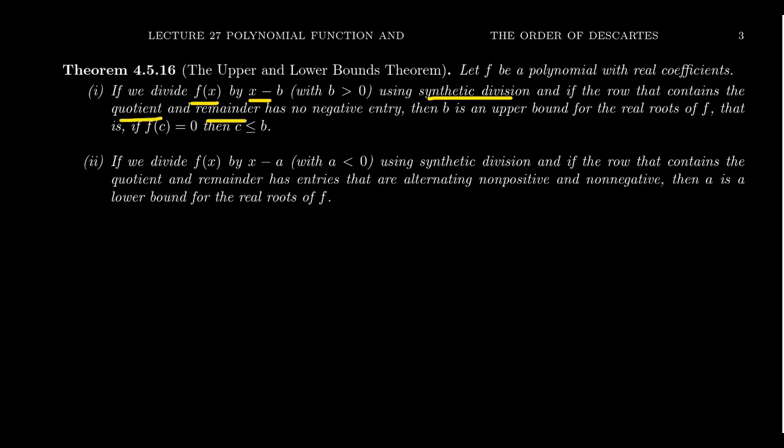Look at the bottom row. If the bottom row has no negative entries in it, no negatives whatsoever, that means that b is an upper bound for all the real roots of f. That means you picked a number that was too big, you need to try something smaller. If the numbers in the bottom row are all positive you need to try something smaller.